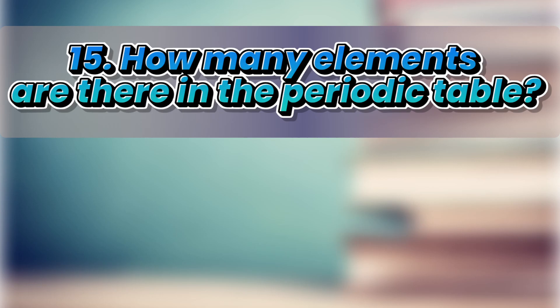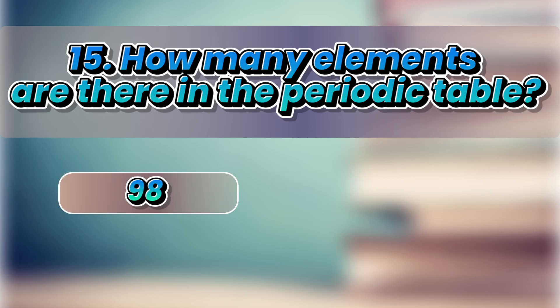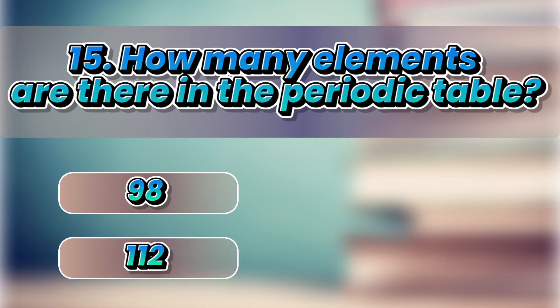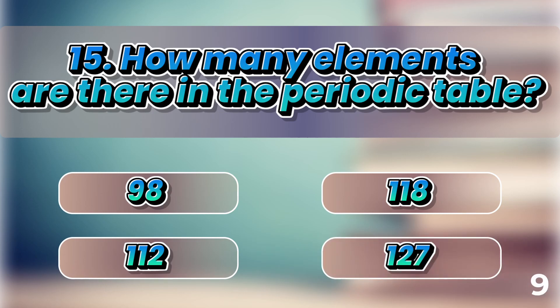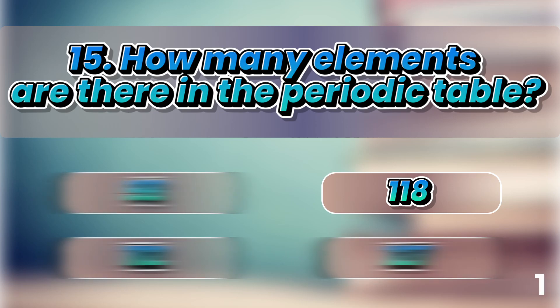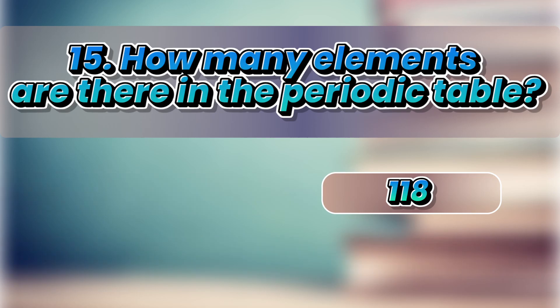How many elements are there in the periodic table? 98, 112, 118, 127. It's 118.